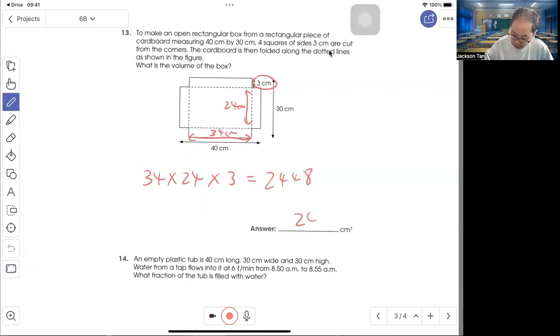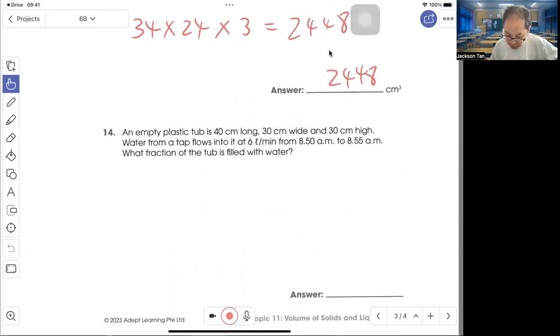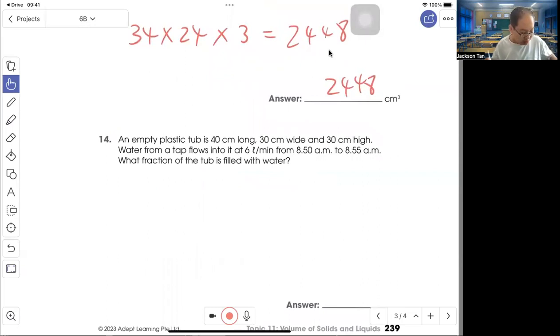Question 14: A plastic tank is 40 cm by 30 cm wide by 30 cm high. Water flows at 6 liters per minute from 8:50 to 8:55, so this is about 5 minutes. 6 liters times 5, total flow is 30 liters.